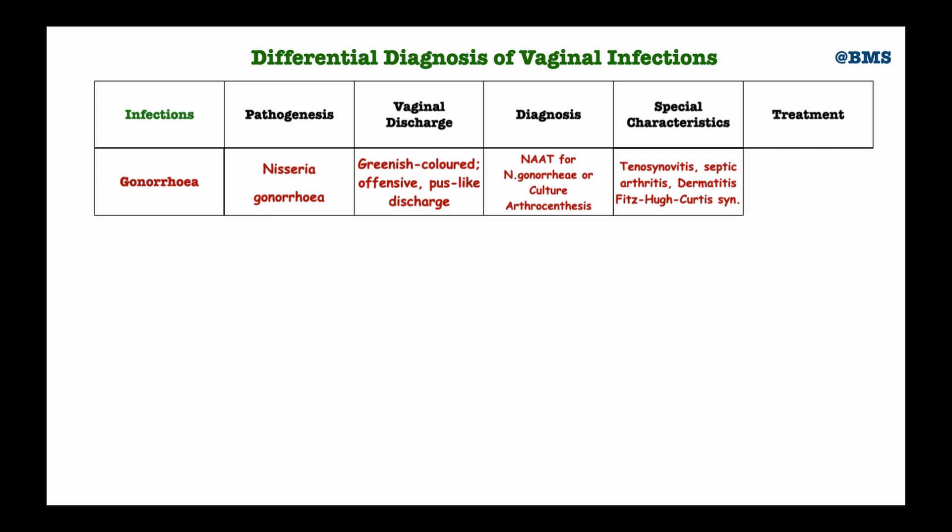Another special feature of gonorrhea is the Fitz-Hugh–Curtis syndrome, which is characterized by inflammation of the liver's capsule. This inflammation usually occurs in women as a complication of pelvic inflammatory disease caused by gonorrhea infection. This syndrome is characterized by fever, nausea, vomiting, a characteristic right upper quadrant pain, and pleuritic chest pain.